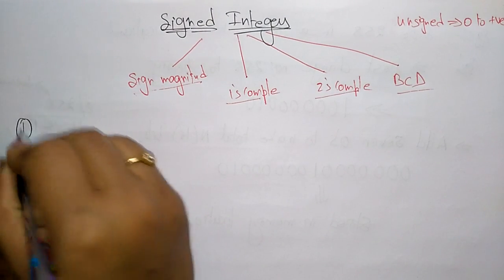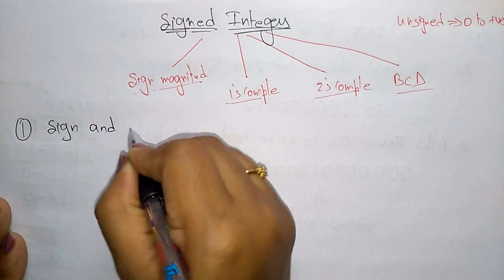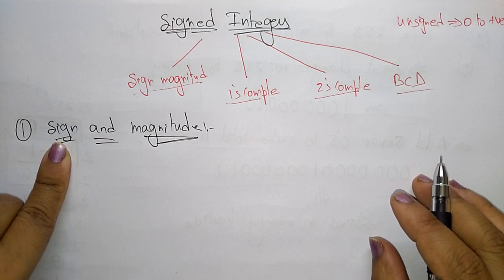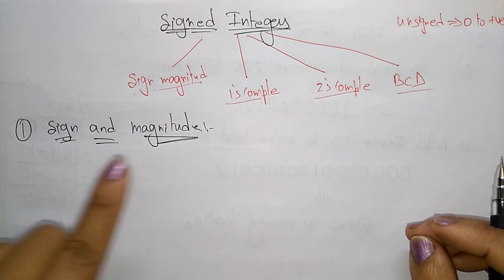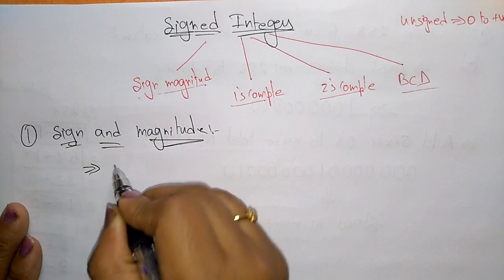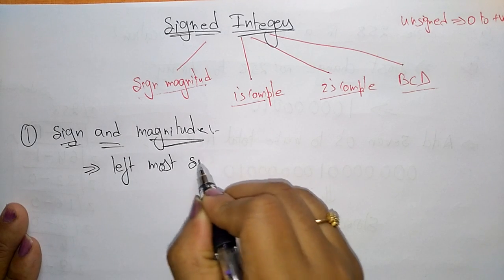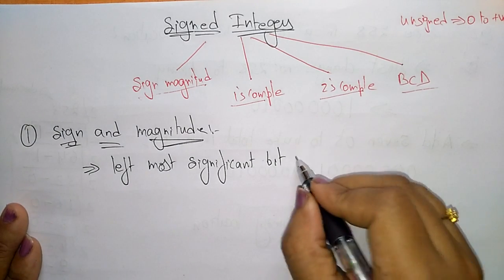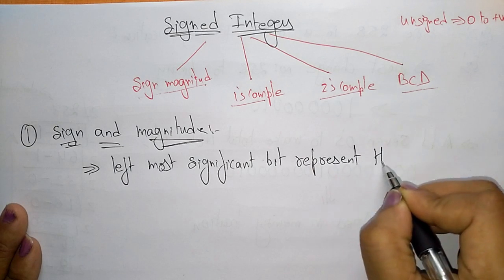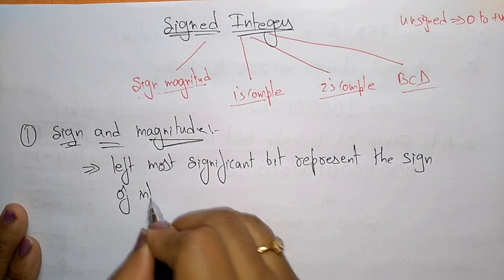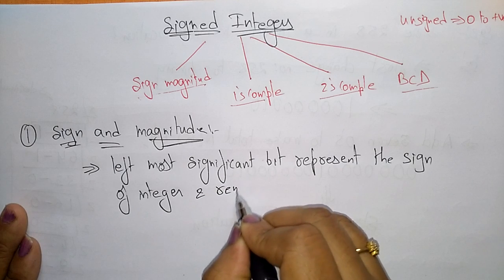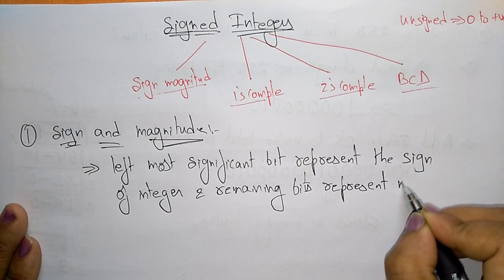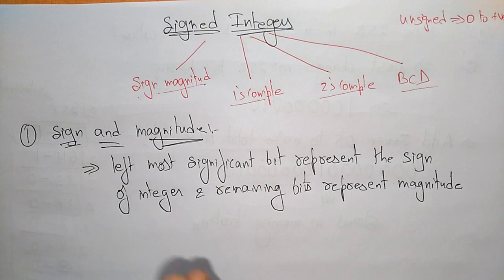Now let us discuss signed integers one by one. First, sign and magnitude. The name itself tells us: the sign indicates whether the number is positive or negative, and the rest of the bits are the magnitude. The leftmost significant bit represents the sign.